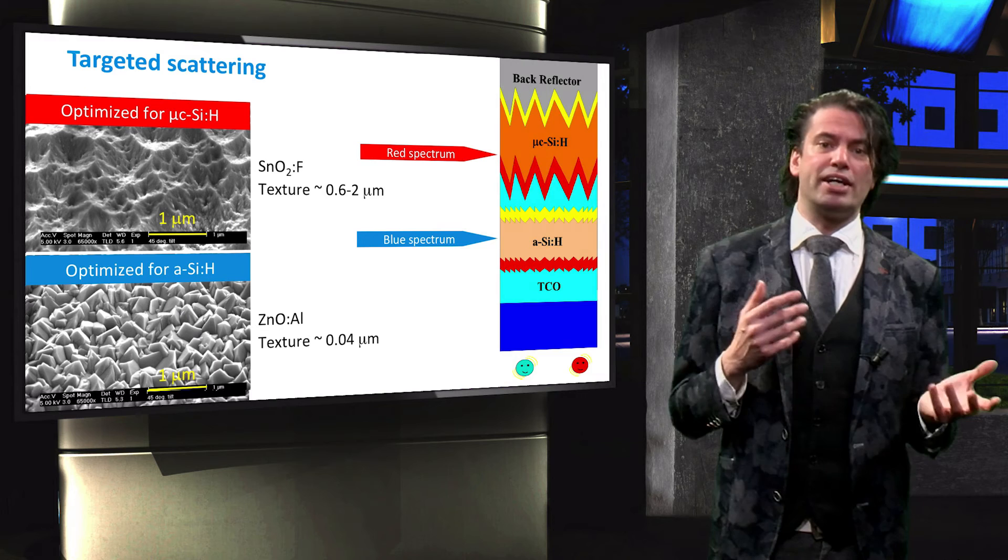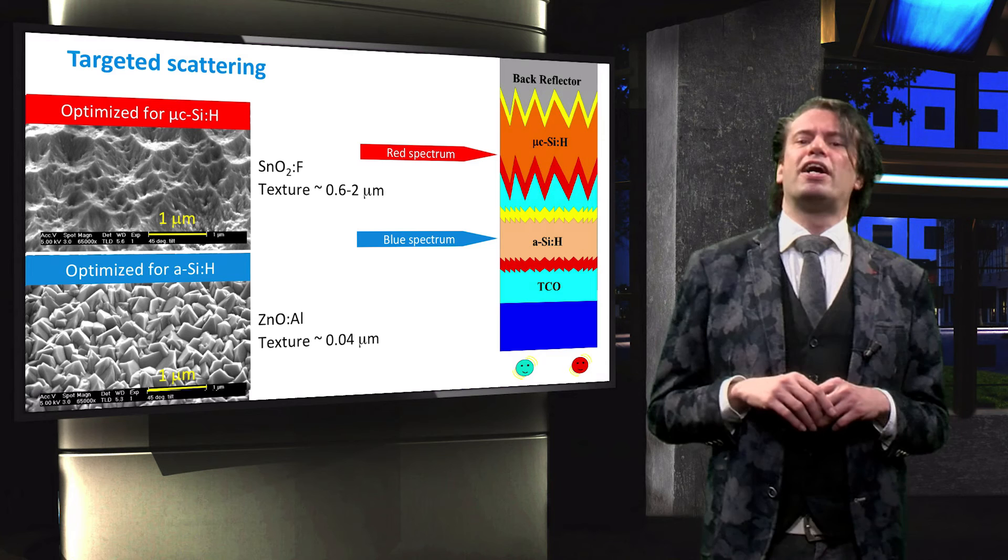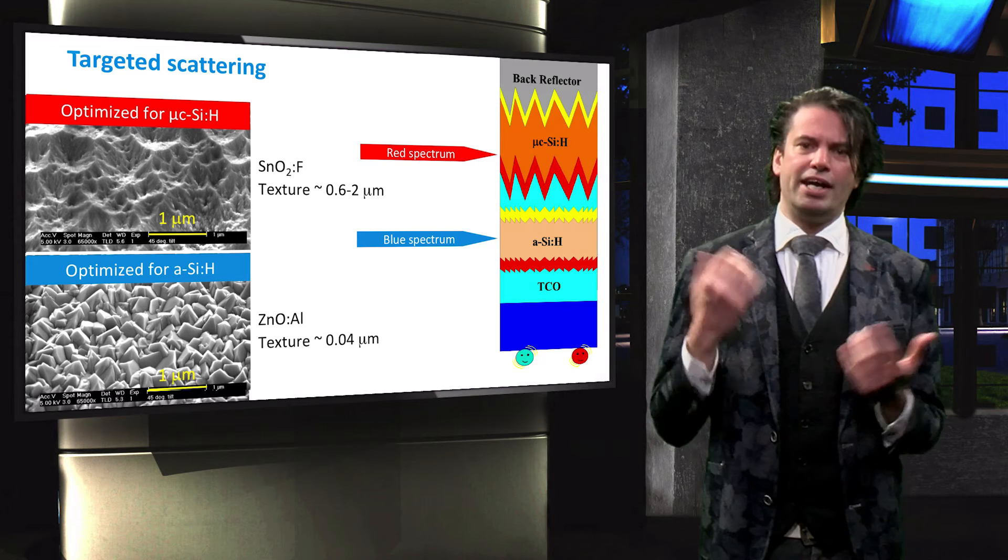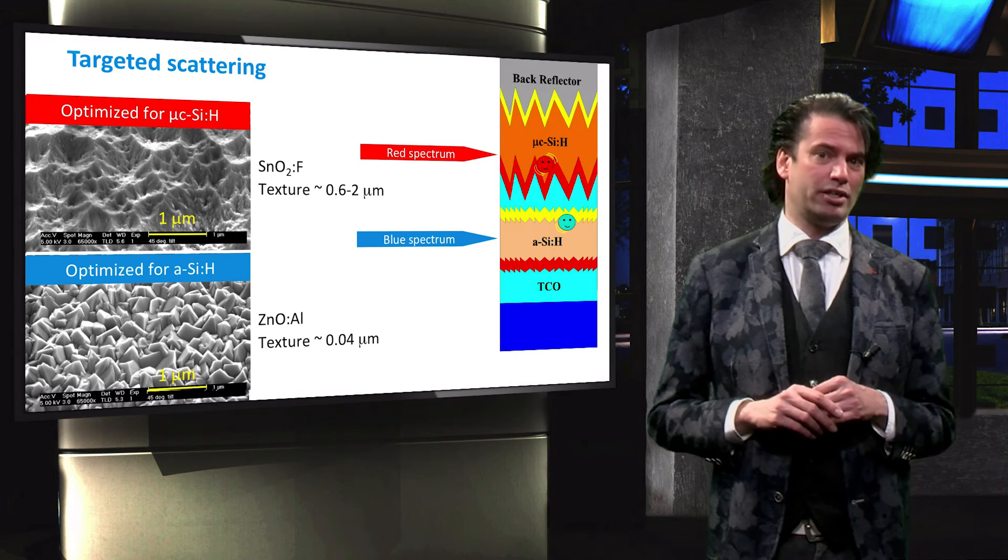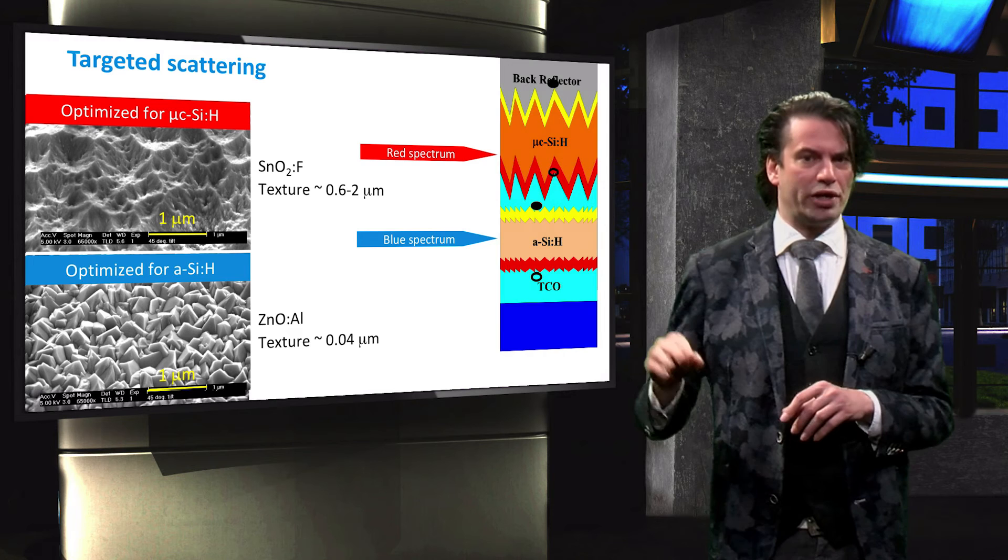The different scattering properties of red and blue light are taken into account during solar cell design as well. An example thereof can be found in a multi-junction micromorph solar cell. Incident light first encounters a high bandgap amorphous silicon absorber layer, responsible for the blue light absorption. Red light is transmitted through this layer and absorbed in the second microcrystalline silicon absorber layer with a lower bandgap energy.